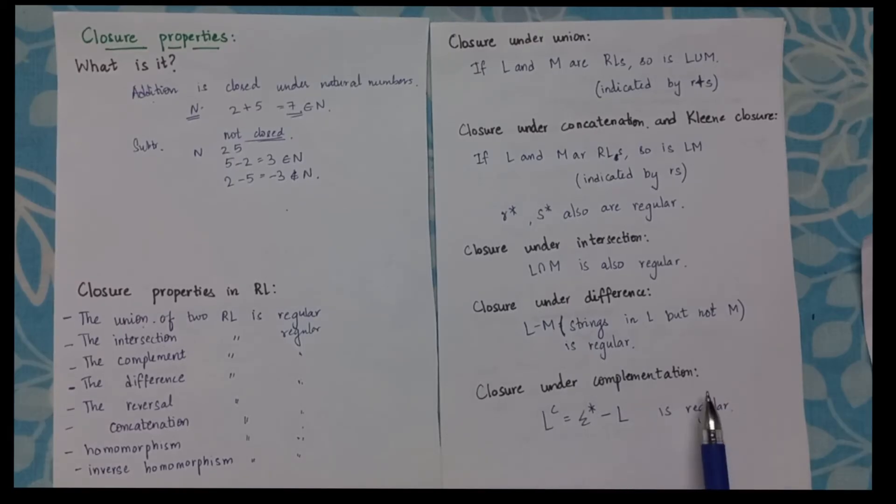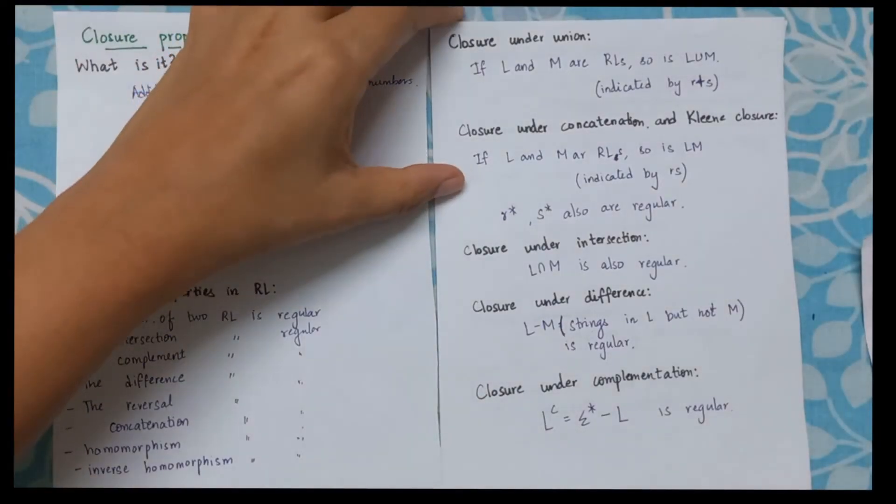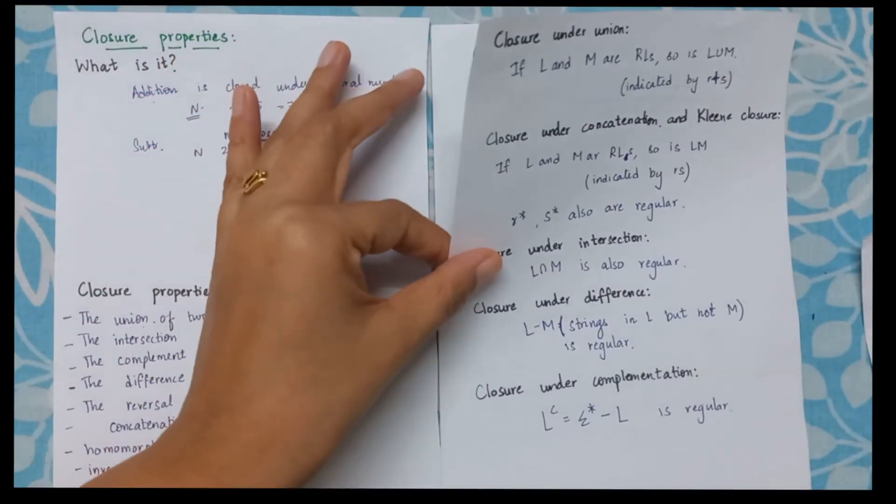Closure under complementation. So now a complement of a language is nothing but Σ* minus L. That is whatever is there in Σ* but not in L is said to be belonging to L complement. Now this operation is also closed.